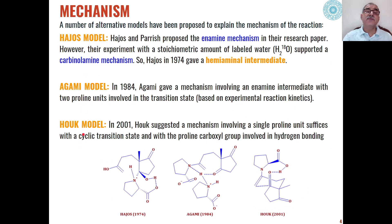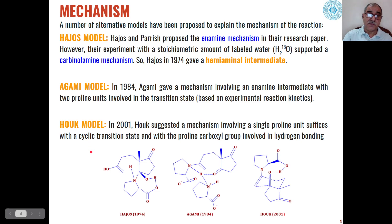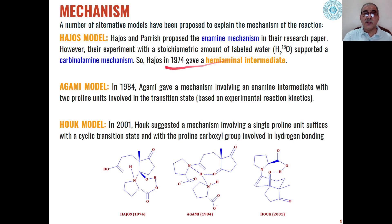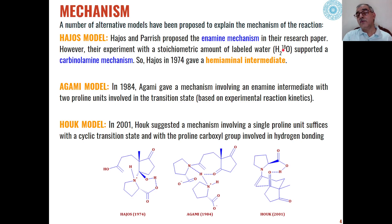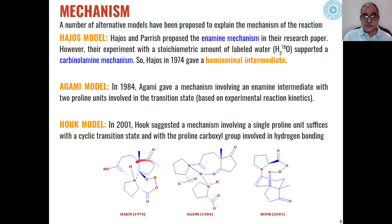There are different models given by different scientists explaining which type of intermediate is involved in the Hajos-Parrish reaction. One model is given by Hajos and Parrish themselves, who proposed the involvement of an enamine mechanism. However, when the experiment was done using a stoichiometric amount of labelled water, the results supported the carbinolamine mechanism. Because of this, in 1974 Hajos proposed a hemiaminal intermediate, which is called the Hajos model, where the hydrogen of the proline carboxylate moiety forms a bond with the ketone part of the intermediate.